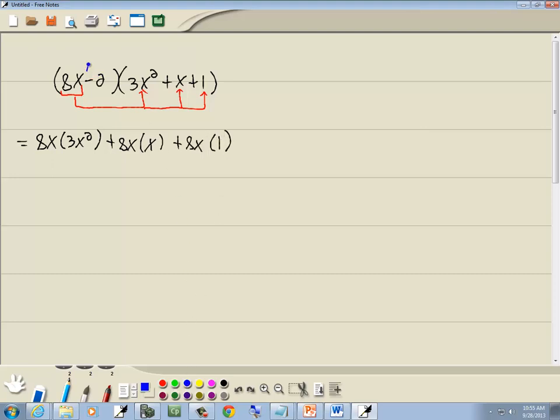And then we'll take our second term, the negative 2, and we'll multiply it times each term over here, times the 3x squared, times the x, and times the 1. So negative 2 times 3x squared, negative 2 times x, and negative 2 times 1.